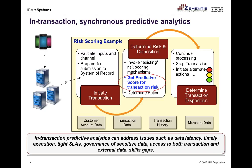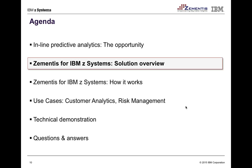We're talking about a one-to-two millisecond execution environment. If your transaction space is about half a second and you're adding a millisecond or two to get this rich analytic capability, isn't it worth it? IBM certainly thinks so — that's why we've partnered with Zementis, a leader in executing predictive models fast. They have technology that injects the scoring engine directly inline with transactions running on the mainframe.